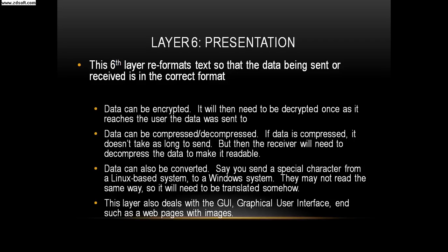This sixth layer reformats text so that the data being sent or received is in the correct format. Data can be encrypted, and will then need to be decrypted once it reaches the intended user. Data can also be compressed and decompressed — if data is compressed, it doesn't take as long to send, but the receiver will need to decompress it to make it readable. Data can also be converted.